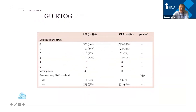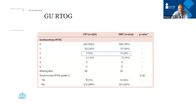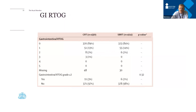The primary toxicity outcomes were measured using the RTOG toxicity scale, focusing particularly on grade two side effects, which have a significant impact on patients. For genitourinary toxicity, grade two was 2% in conventionally fractionated radiotherapy and 3% in SBRT — not statistically different. This is very encouraging: you can give much larger doses per day over a shorter period without compromising genitourinary toxicity. Similarly for gastrointestinal side effects, grade two was 2% in both arms — again no statistical difference.